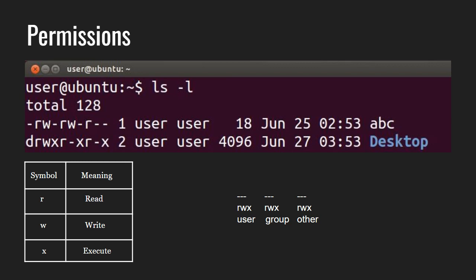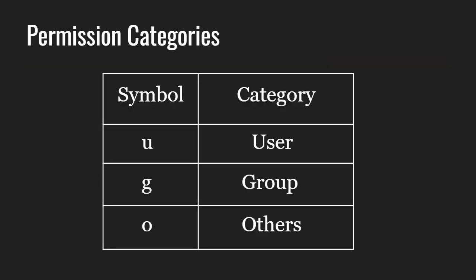Let's learn a bit more about user, group and others — these are the three permission categories. The user permissions apply only to the owner of the file or directory and will not impact the actions of other users. The group permissions apply only to the group that has been assigned to the file or directory and will not affect the actions of other users. The others permission applies to all other users in the system.